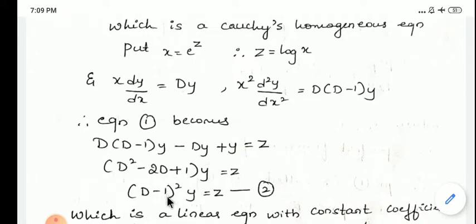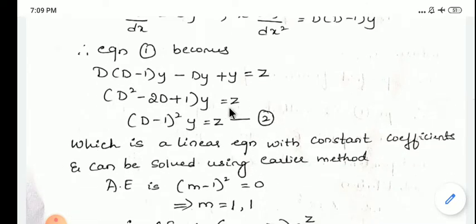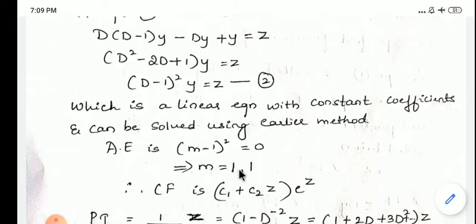With all substitutions in equation 1, it becomes D(D-1)y - Dy + y = z. Simplifying, we get (D-1)²y = z, called equation 2. The auxiliary equation is (m-1)² = 0, giving roots m = 1 and 1. Since roots are real and equal, the complementary function is CF = (c1 + c2 z)e^z.